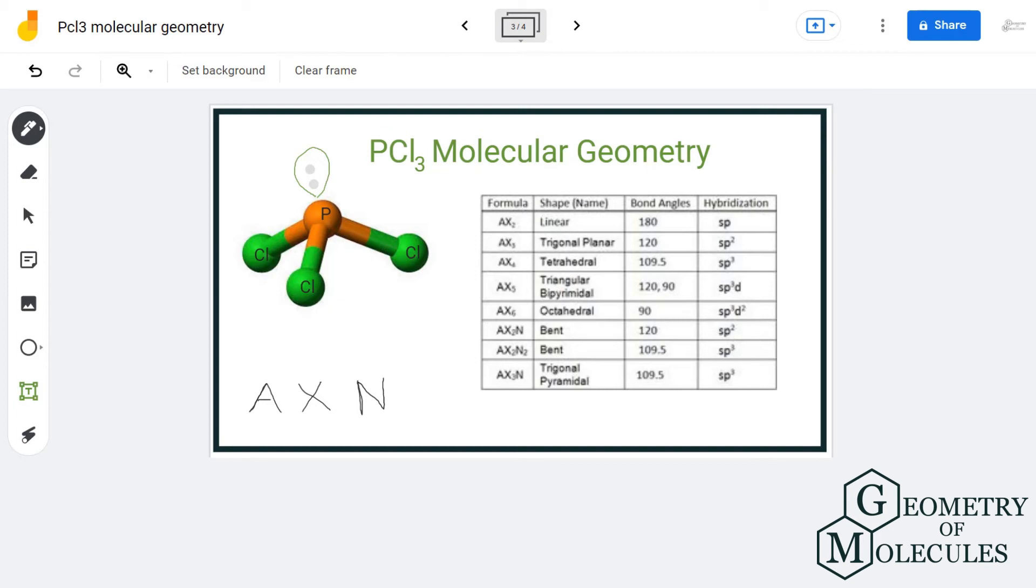Here, we have Phosphorus as central atom, there are 3 Chlorine attached to it and 1 lone pair of electrons. This gives us a final notation of AX3N.